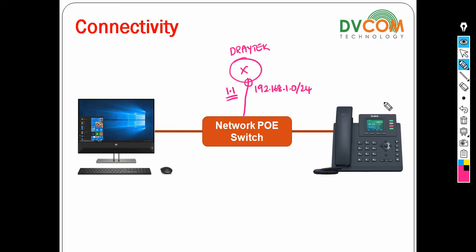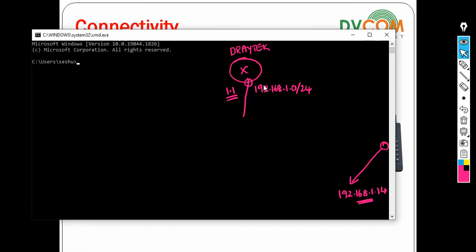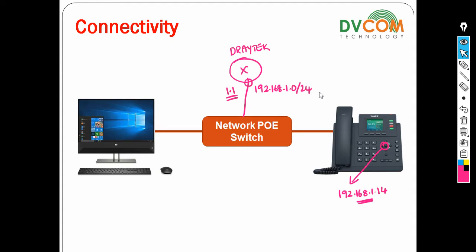Now if I want to know what IP address my phone has picked up, you can see there is a middle button on the phone. Just press that button and you can see what IP address it picked up. The IP address picked up is 192.168.1.14, taken from the DHCP server. To check the PC's IP address, open command prompt and type ipconfig — you can see it is 192.168.1.13.